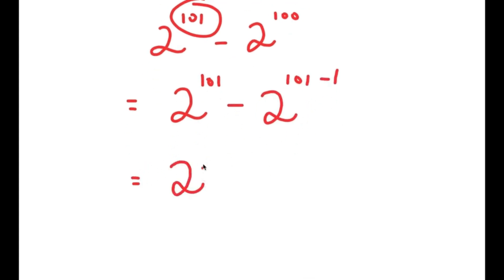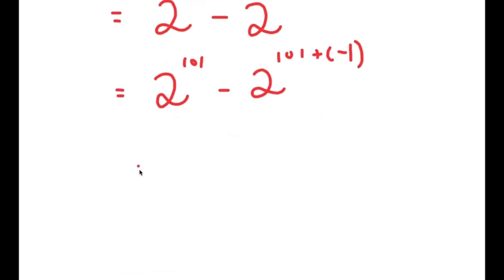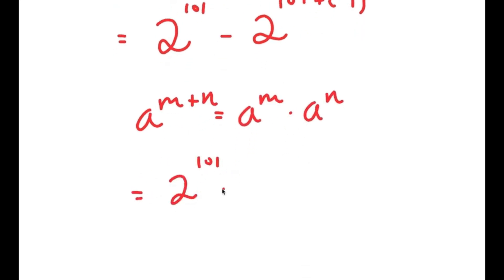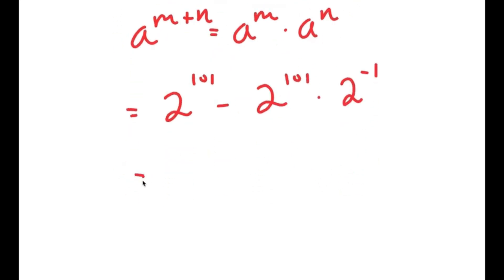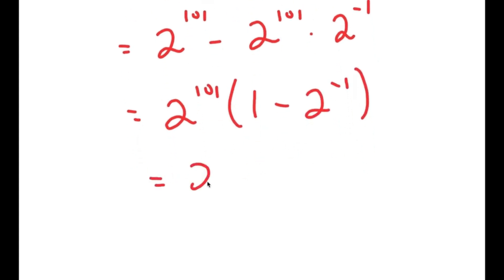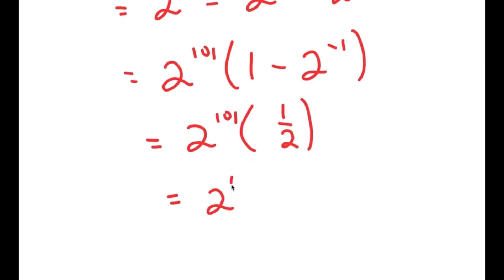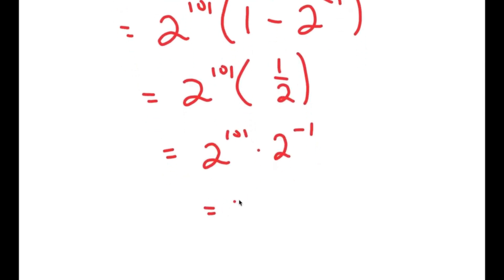This is the same thing as 2 to the power of 101 minus 2 to the power of 101 plus negative 1. Using that property again — a to the power of m plus n equals a to the power of m times a to the power of n — I get 2 to the power of 101 minus 2 to the power of 101 times 2 to the power of negative 1. Factoring out 2 to the power of 101 gives 2 to the power of 101 times 1 minus 2 to the power of negative 1, which equals 2 to the power of 101 times one half, which equals 2 to the power of 100.